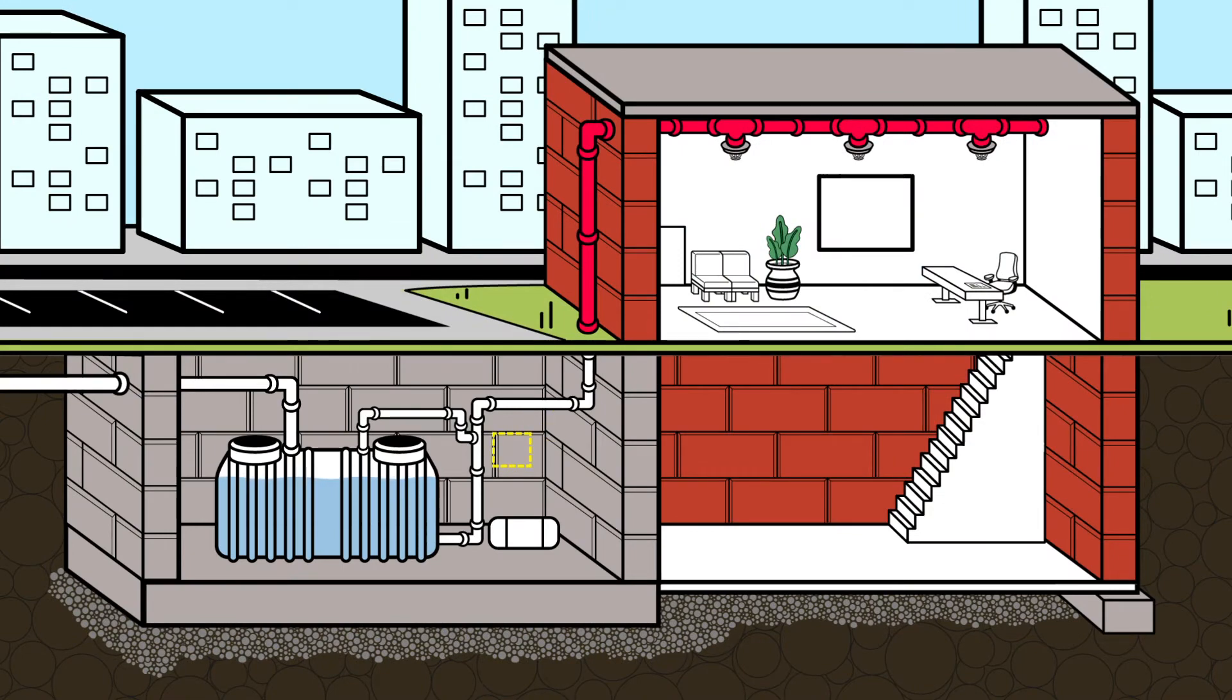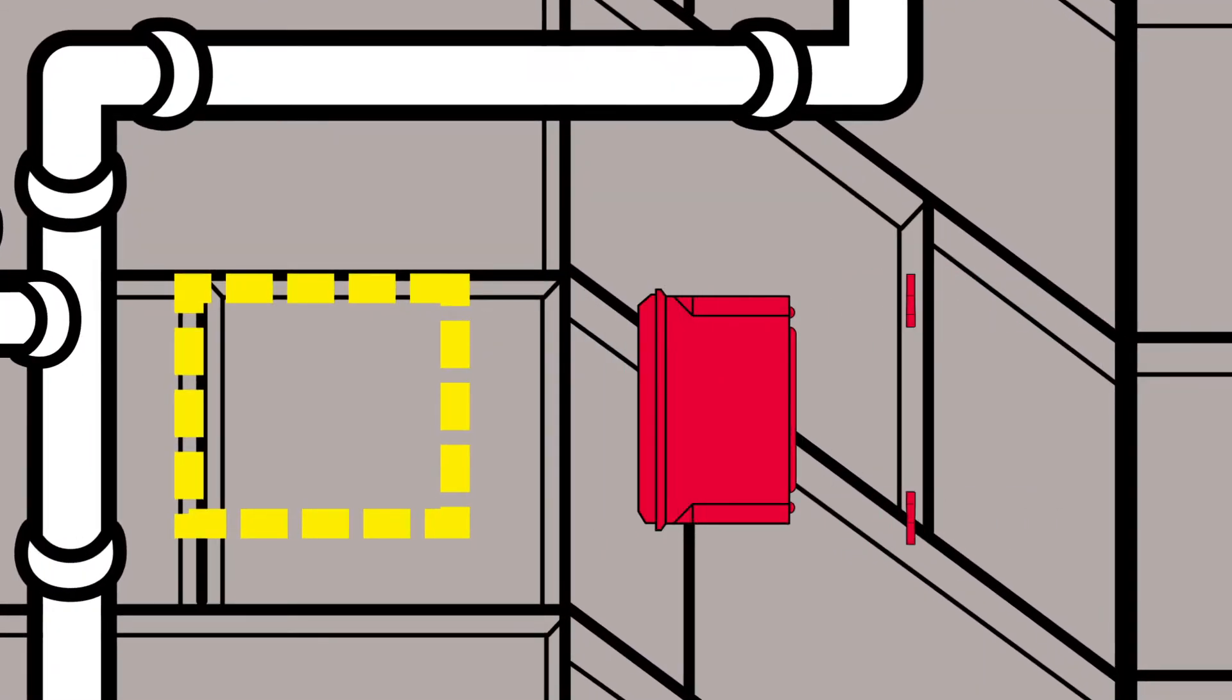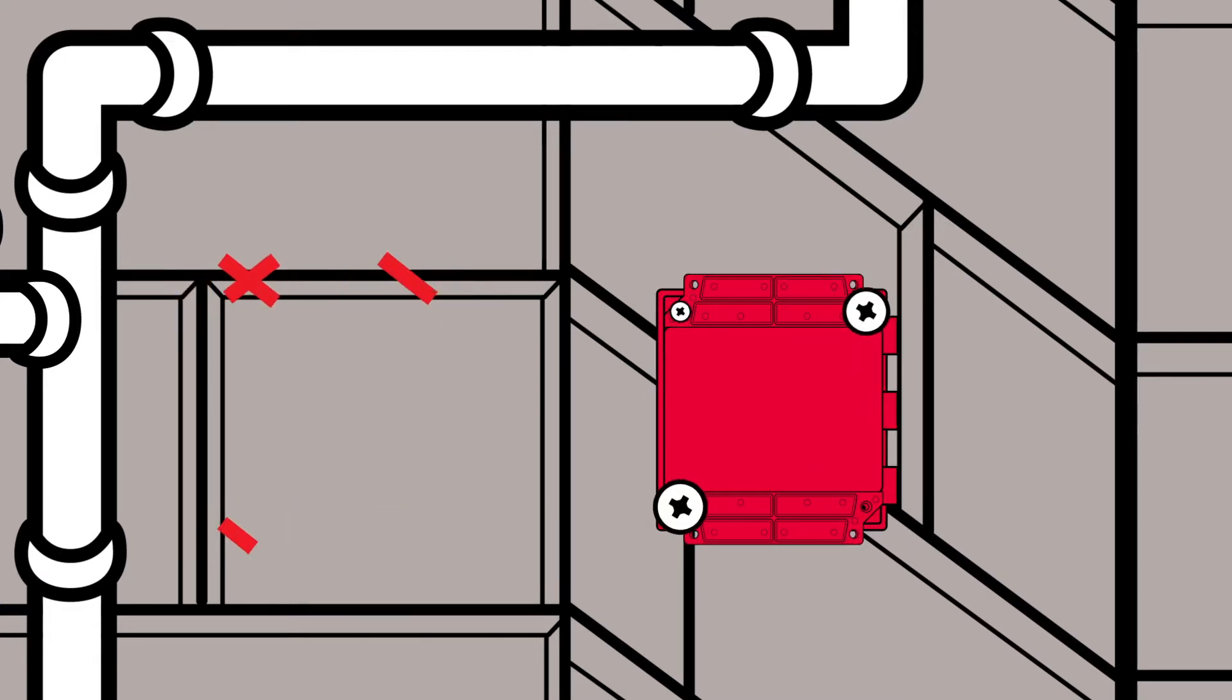We recommend placing the control panel near the tank, keeping it above the water level but out of line of sight of any VFD or DAS. The panel can be mounted on the wall using proper mounting methods for a NEMA 4X panel.